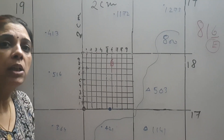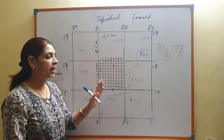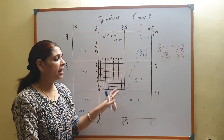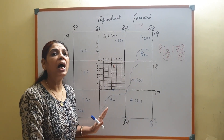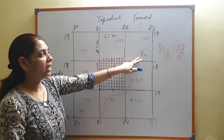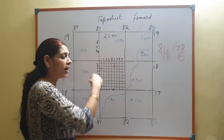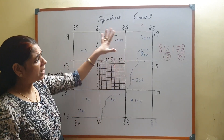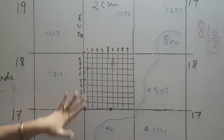Now you know the difference between the spot height and the triangulated height. Contours are imaginary lines drawn on the map joining places with equal height. For example, this is a contour with a value of 800 — spot heights of the same value are joined and it forms a contour line.